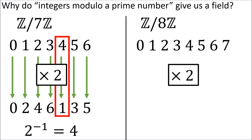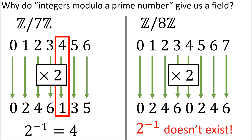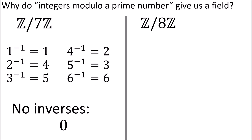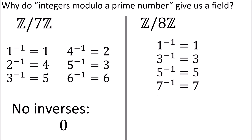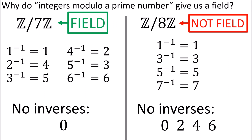Now let's multiply by the number 2. With the integers mod 7, multiplying by 2 just shuffles the numbers around, and we see that 4 times 2 equals 1 — so the multiplicative inverse of 2 in the integers mod 7 is 4. But with the integers mod 8, when we multiply by 2, something interesting happens. We don't get the entire number set shuffled around. Instead, we get 0, 2, 4, 6, 0, 2, 4, 6 — a subset of the original numbers with repetitions. Most importantly, none of the results are equal to 1, meaning there is no number that multiplies 2 to give 1. So 2 has no multiplicative inverse in the integers mod 8, which is why the integers mod 8 don't form a field. This is why the integers mod 7 are a field, and the integers mod 8 are not.